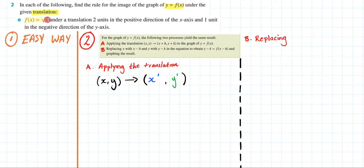f(x) equals the square root of x and it's under a translation of two units in the positive direction of the x-axis and one unit in the negative direction of the y-axis.